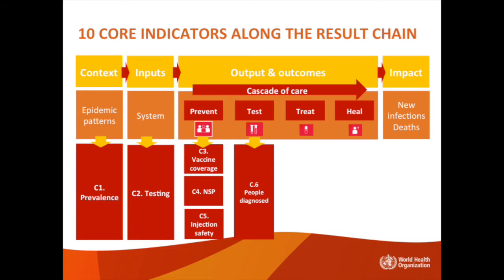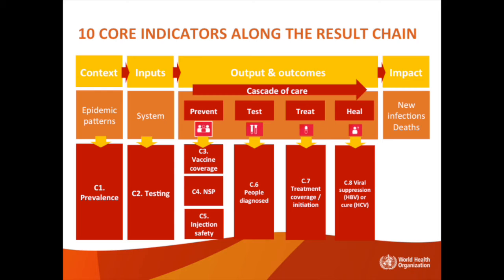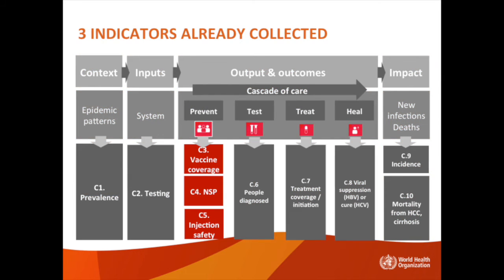We then enter the cascade of care and treatment with C6, which is the proportion of those infected who have been diagnosed. C7 is treatment coverage for hepatitis B or treatment initiation for hepatitis C. C8 is about viral suppression for HBV or cure for HCV. C9 is the incidence of HBV and HCV infection. C10 is the mortality from hepatocellular carcinoma or cirrhosis. The three prevention indicators from C3 to C5 are already collected in the context of other programs.